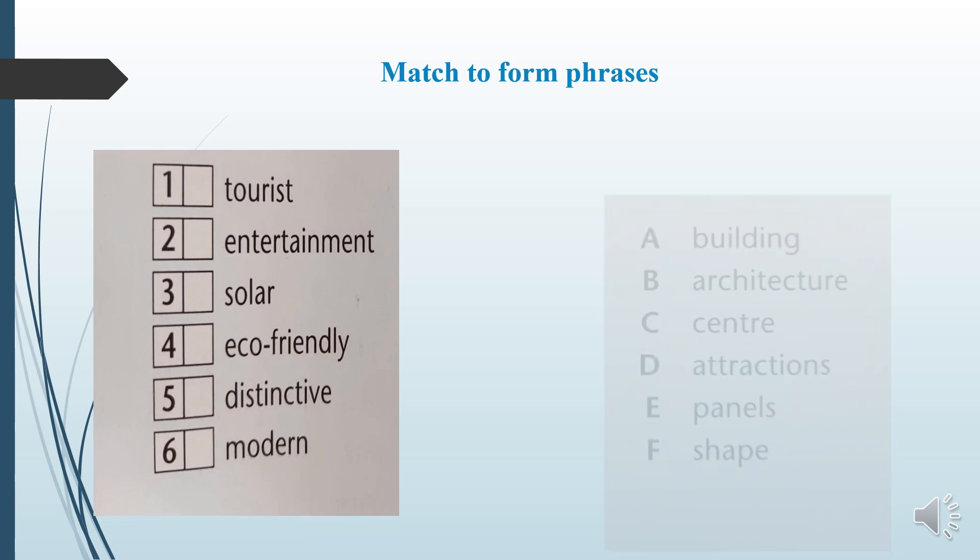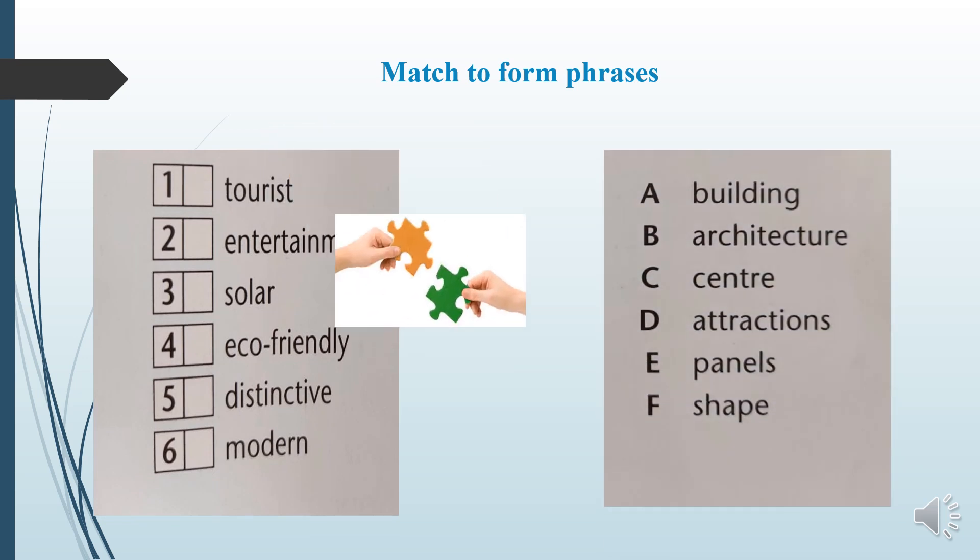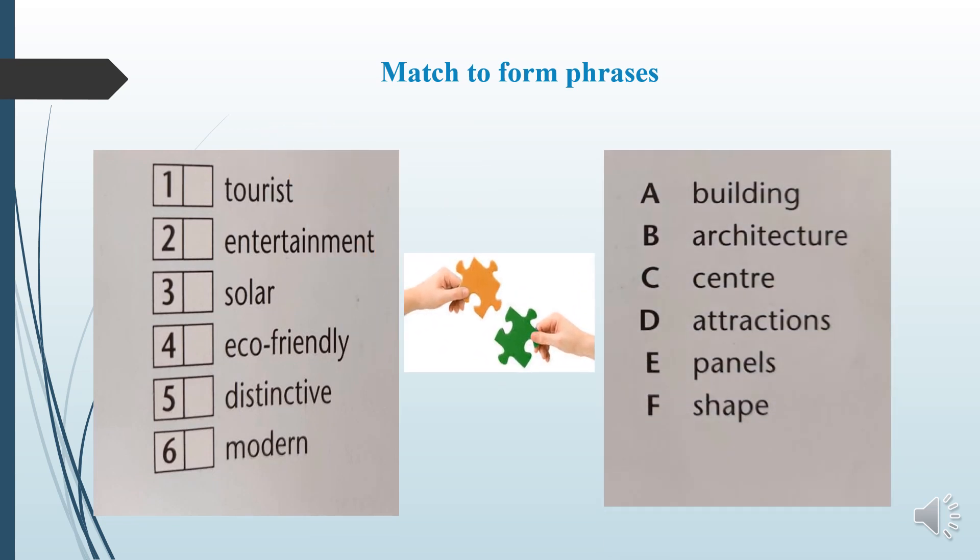Match to form phrases. You are given two columns — the first column has six words and the second column has six words. You must combine these words and match them. By matching these words you must make phrases.